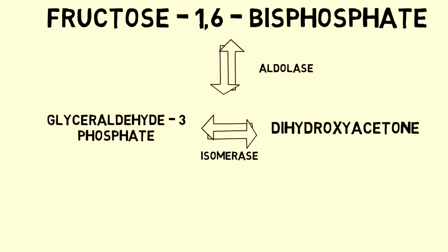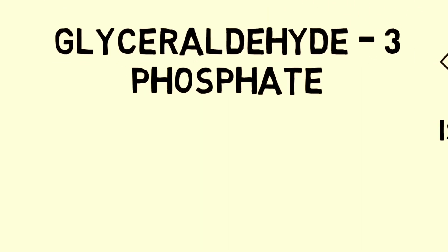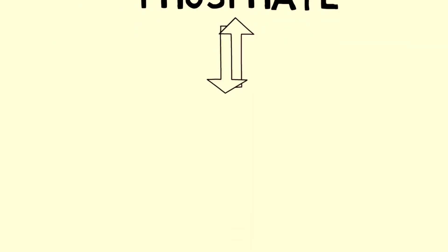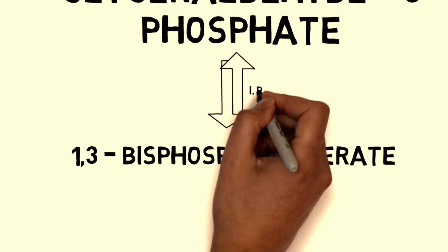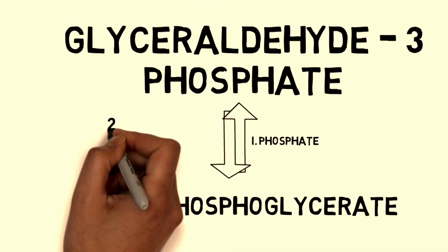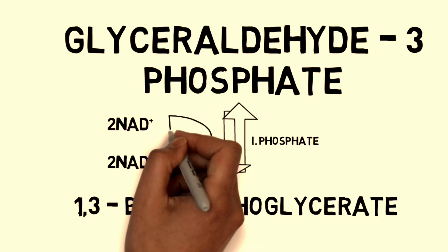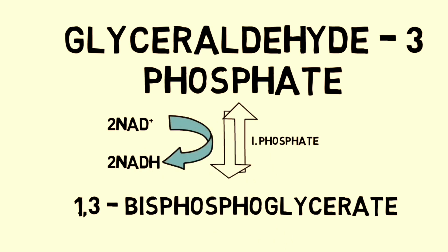From this stage, the formation of pyruvate starts, and the payoff phase also begins here. Numerous ATP molecules will be synthesized through substrate level phosphorylation. Since both sides undergo similar changes, you can follow one side of the process. Taking glyceraldehyde 3-phosphate into consideration, the pathway continues: from it, 1,3-bisphosphoglycerate is produced, one phosphate is utilized, and NAD is converted to NADH. The enzyme used is glyceraldehyde 3-phosphate dehydrogenase.